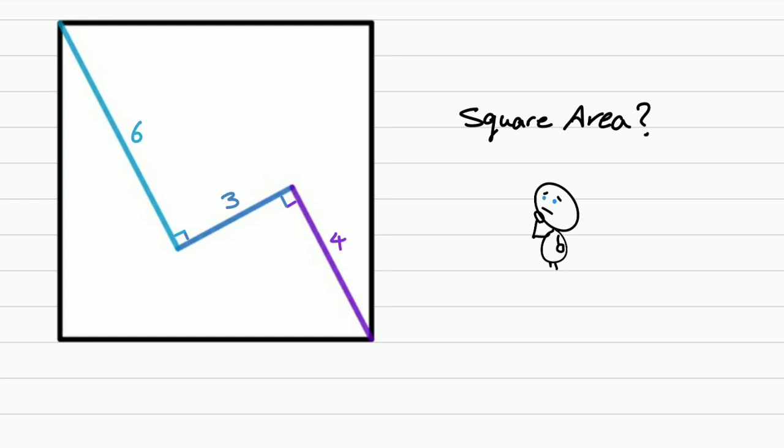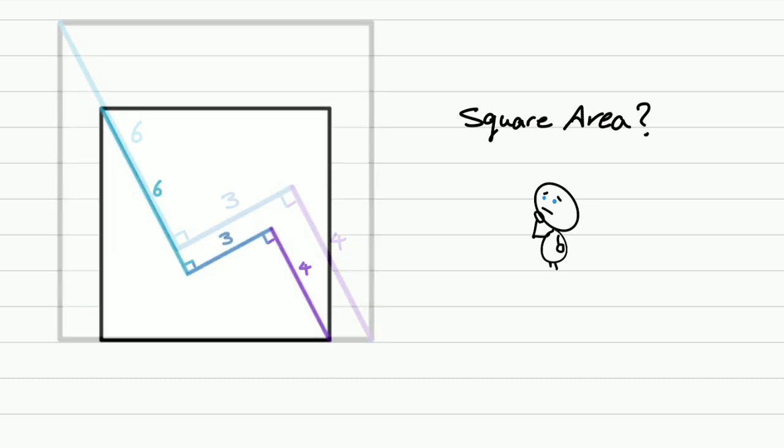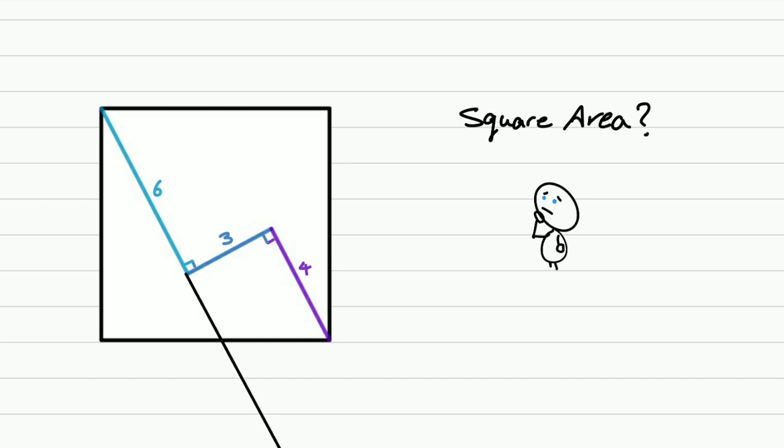Okay, so the trick as always is to add a few segments here. Let me shrink the shape. Now I'm going to continue this segment and this one in this way, and here let's have a perpendicular segment and another one here.